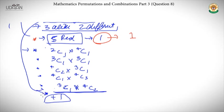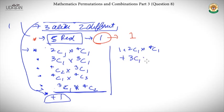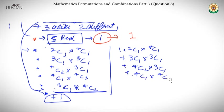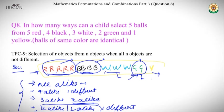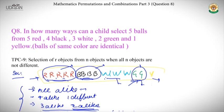We sum all the cases to get the final answer: 1 + 2C1×4C1 + 3C1×3C1 + 4C2×3C1 + ... + 1. Remember, in this problem we do not arrange the balls. This question is good for understanding how to think of and enumerate all possible cases, and when to arrange objects versus when not to.